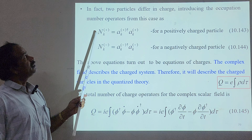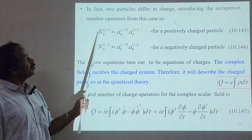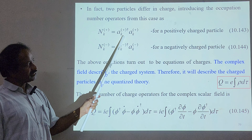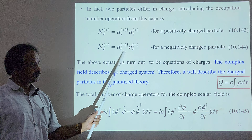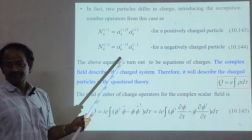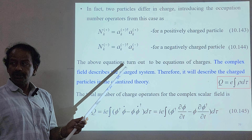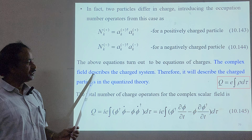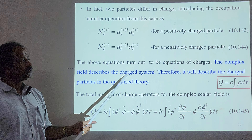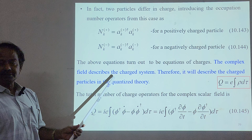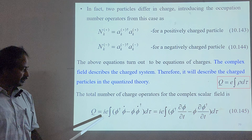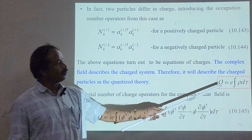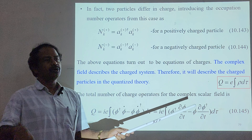At the end we obtain expressions for two particles differing in charge by introducing occupation number operators. The number operator for the positively charged particle and the number operator for the negatively charged particle are given by these expressions. The above equations turn out to be equations of charges. The complex field describes a charge system, so the total number of charge operators for the complex field is expressed as a sum. We recall that charge density rho is charge per unit volume: rho = dQ/d³x.